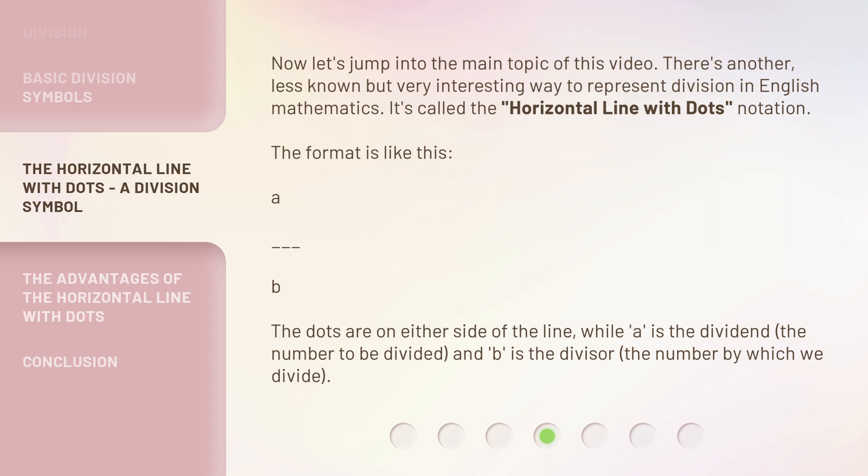a ÷ b. The dots are on either side of the line, while 'a' is the dividend (the number to be divided) and 'b' is the divisor (the number by which we divide).